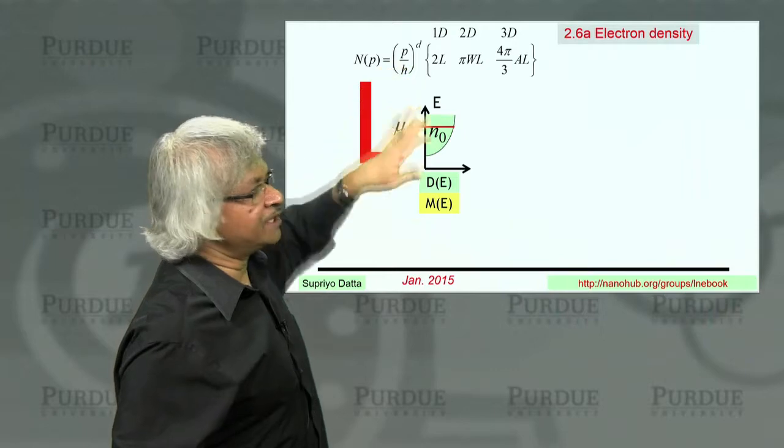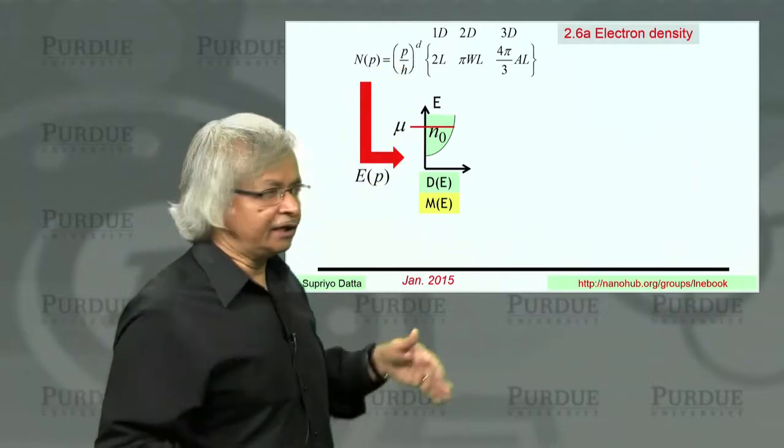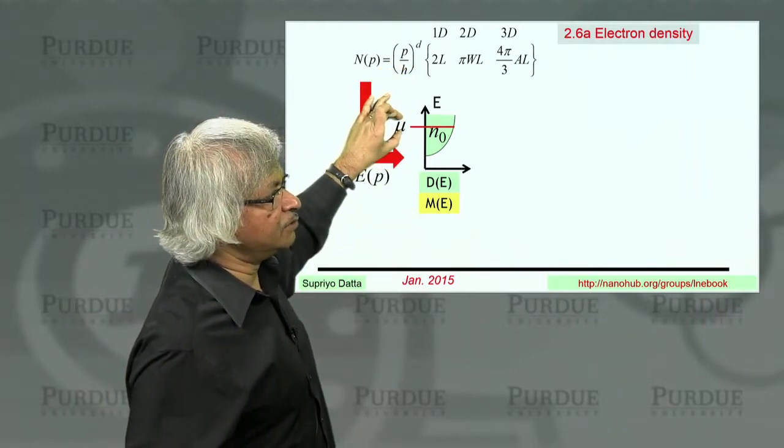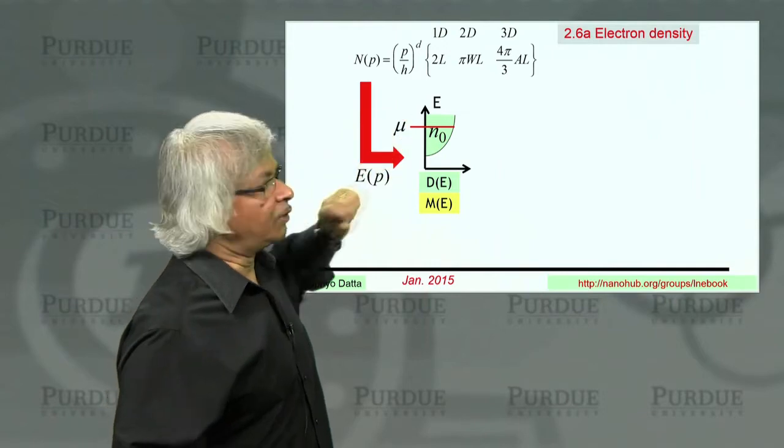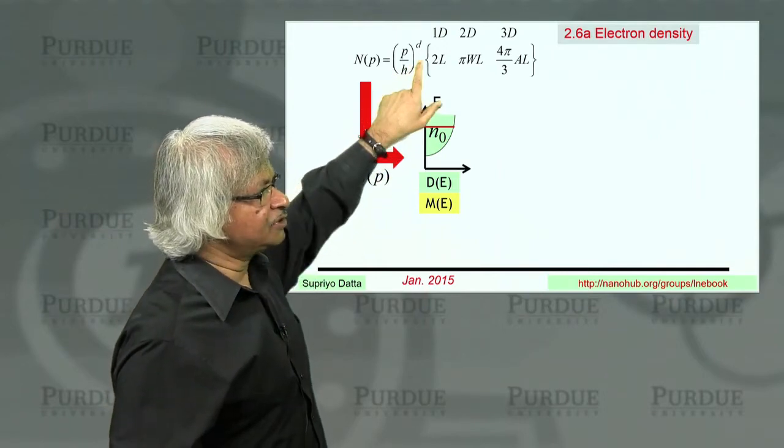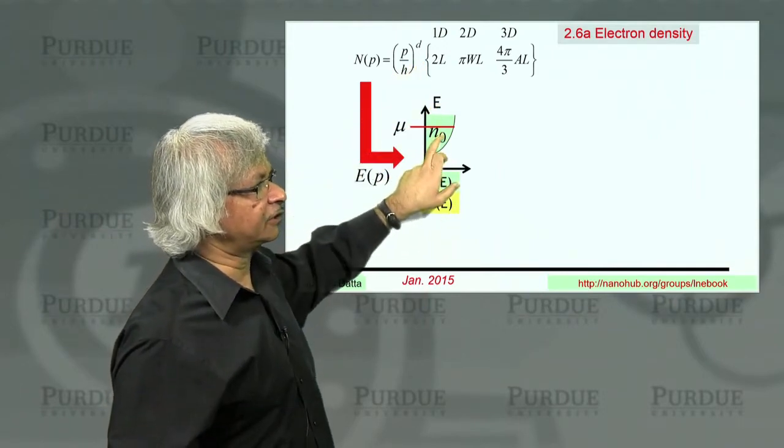Whereas what we want to know is how many states are occupied. And of course, all states below mu are occupied. So what you could do is actually use that function to obtain the electron density.